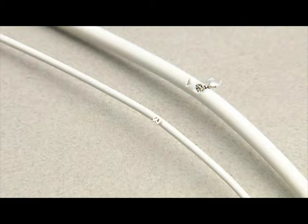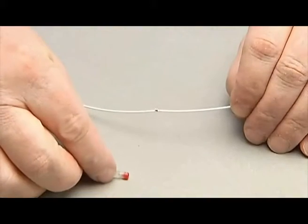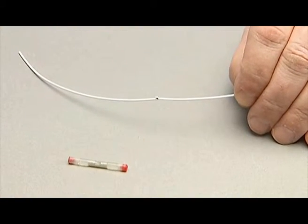First, identify the damaged or broken wire. Select a proper cold-applied splice for the gauge size.